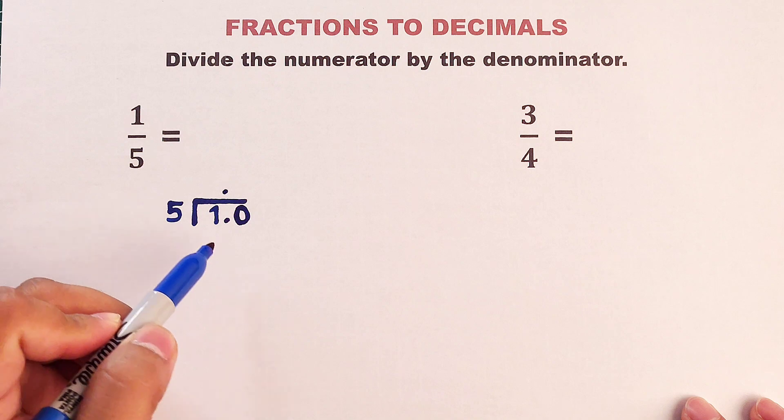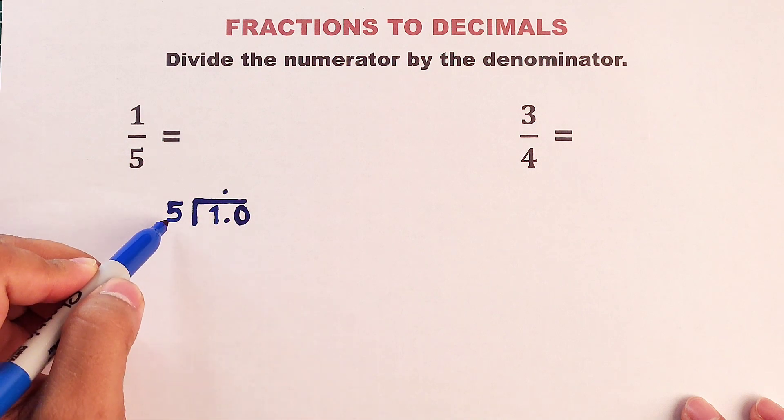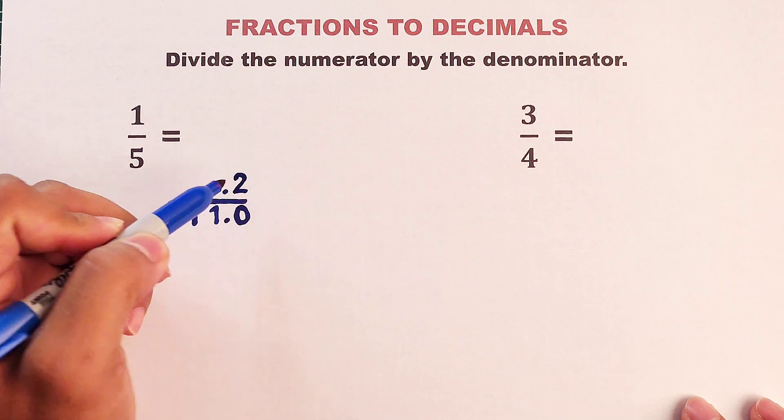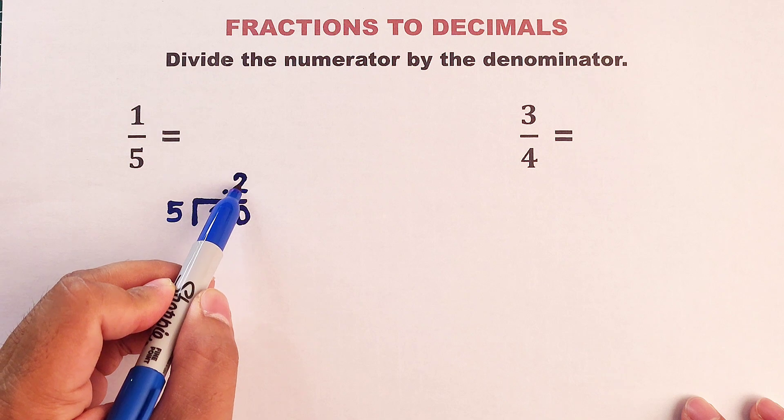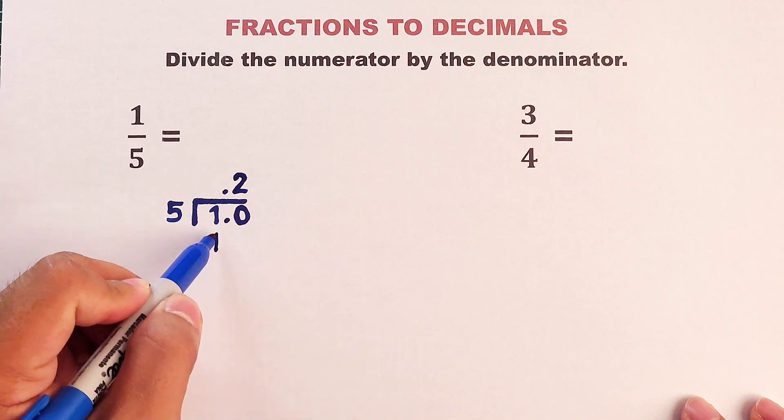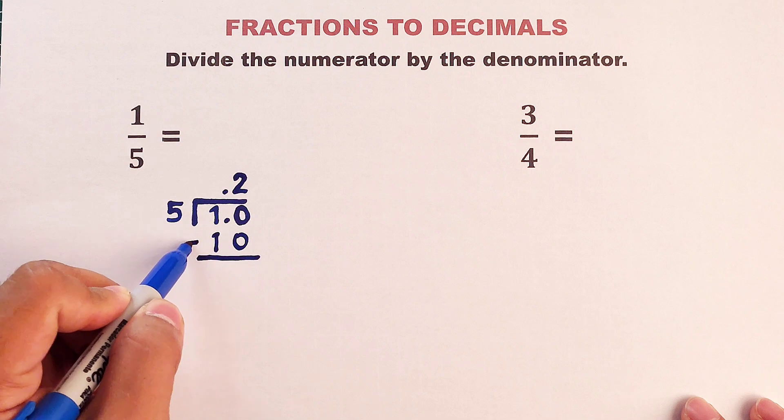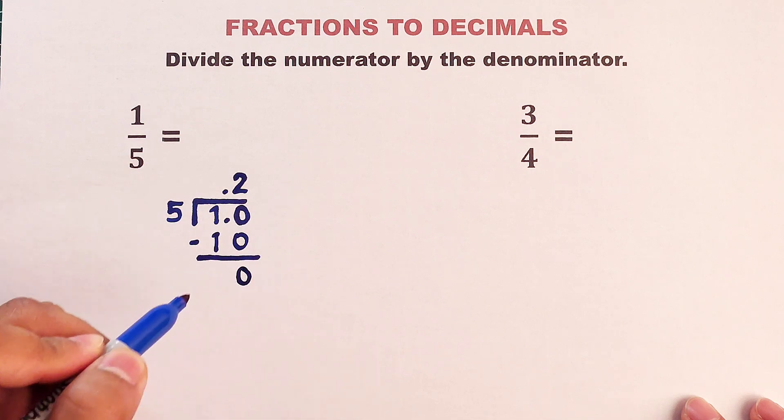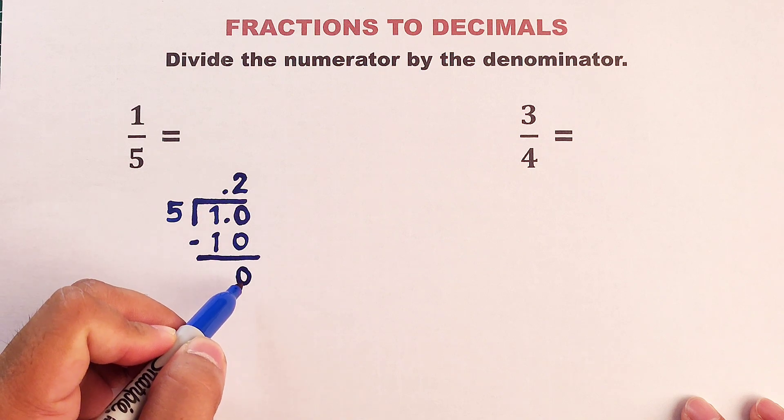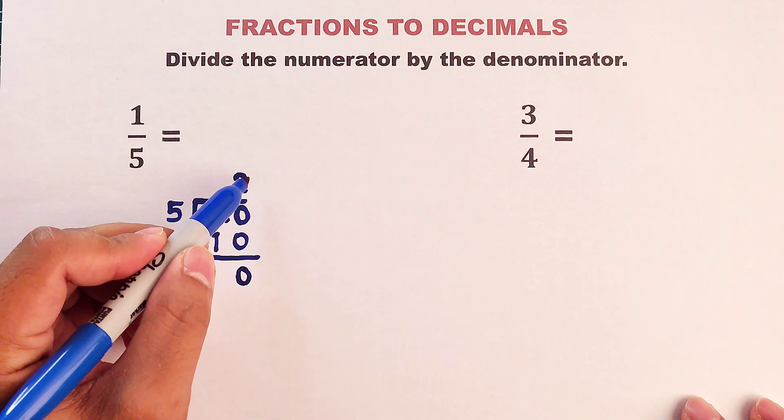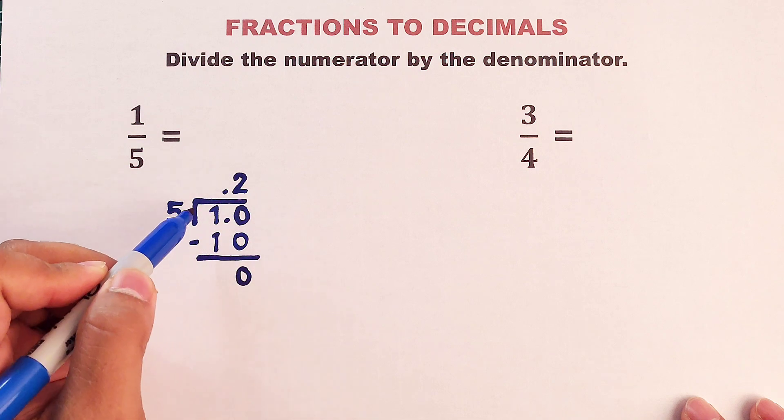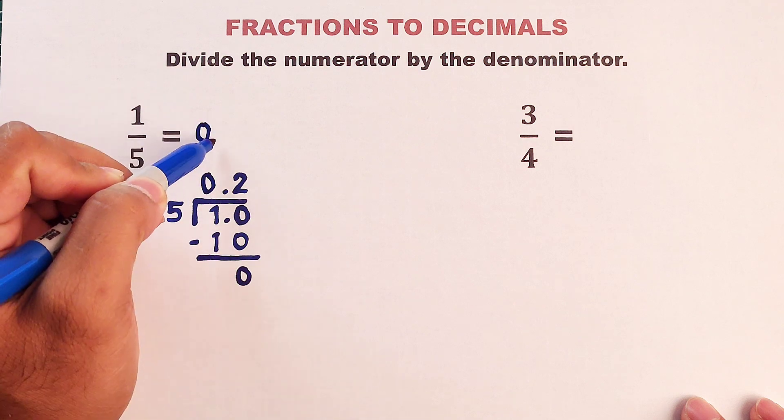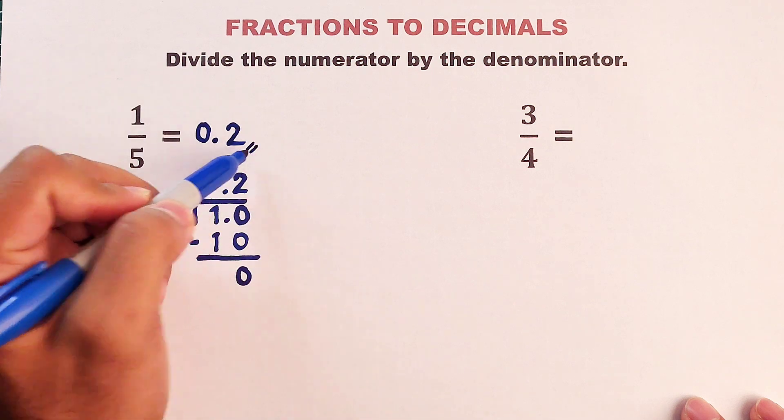Okay, so right now we have 10. 10 divided by 5, how many 5s do we have in 10? We have 2, 2 sets of 5. Then we will multiply 2 and 5. The answer is 10. Then after that, we will subtract 10 minus 10. The answer is 0. If this is 0, automatically, we have our answer. Okay, meaning this 1 over 5 is simply equal to 0.2. This is the final answer.